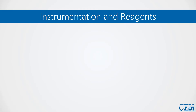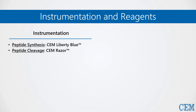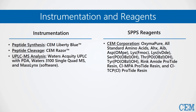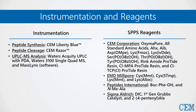Before we get started, I wanted to provide some information on the instrumentation and reagents utilized. All peptides were synthesized fully automated on the Liberty Blue peptide synthesizer. Peptides were cleaved at 41 degrees Celsius on the Razor cleavage system. All UPLC mass spec analysis was performed on a Waters Acquity UPLC with PDA and a Waters 3100 single-quad mass spec, and all peaks were analyzed using the MassLynx software. OxyMAPure, all resins, and nearly all amino acids — both standard and non-standard — were supplied by CEM Corporation. DIC and a handful of non-standard reagents were purchased from EMD Millipore, Peptides International, and Sigma-Aldrich.